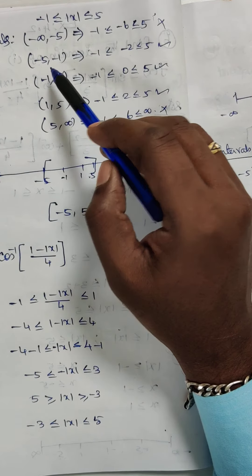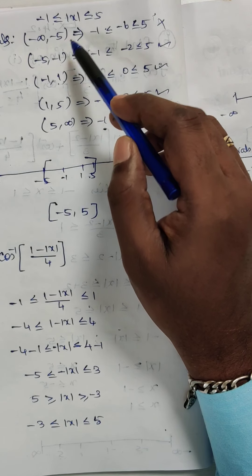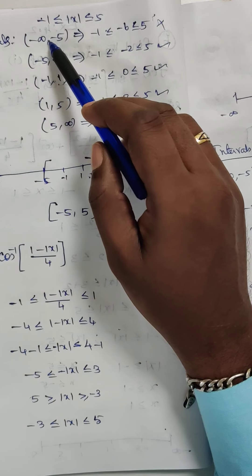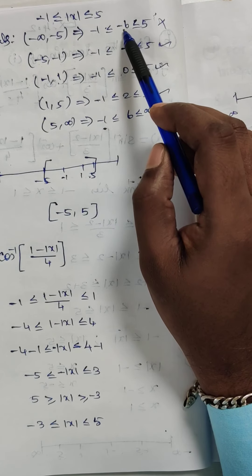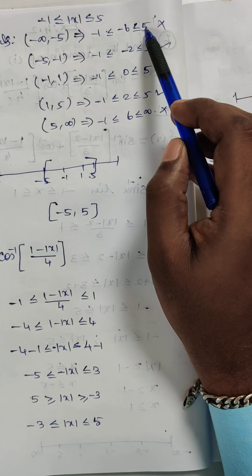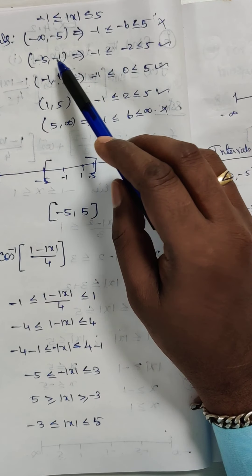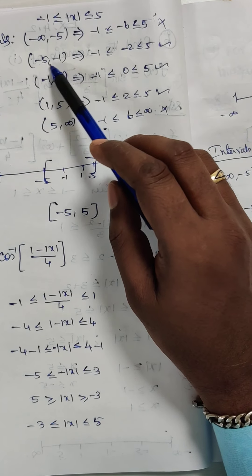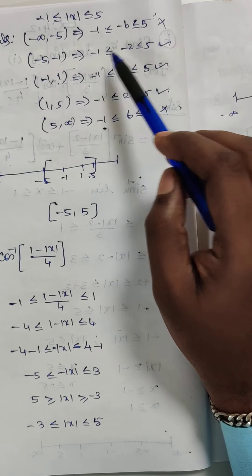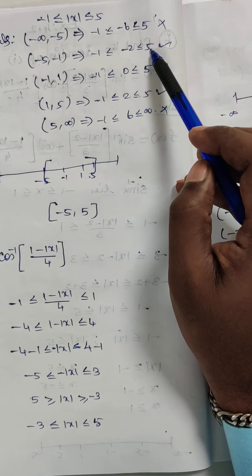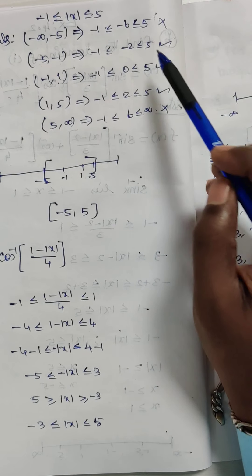We substitute values from each interval into the inequality to check if it is satisfied — that determines the domain. For minus infinity to minus 5, I take minus 6. Minus 6 is not greater than or equal to minus 1, so it is not possible. For minus 5 to minus 1, I take minus 2. Minus 2 is greater than or equal to minus 1 and minus 2 is less than or equal to 5 — this is correct.